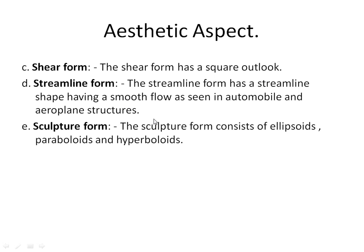Or the shape may be of streamline form, meaning it should look fluent, just like a car, aeroplane, etc. Or it may be of sculpture form — just like ellipsoids, paraboloids, hyperboloids. Most of the auditoriums you see are of sculpture form. So this is about the considerations in shape for aesthetic design.